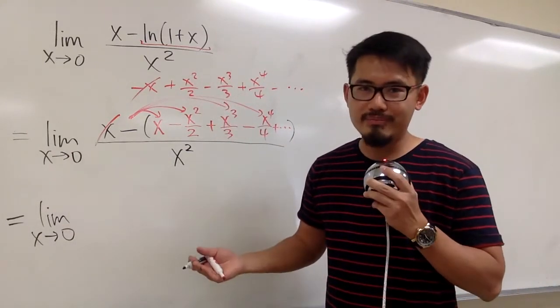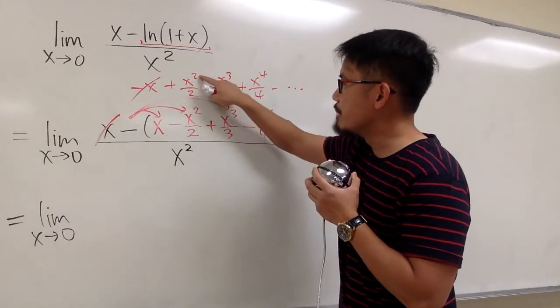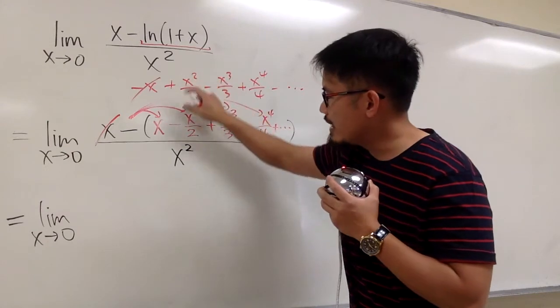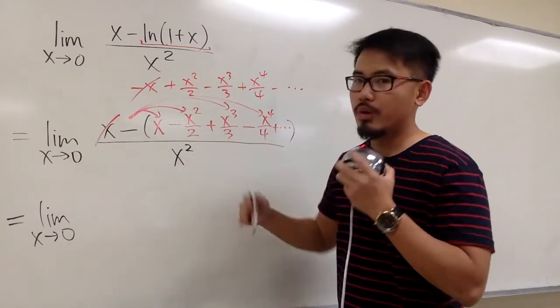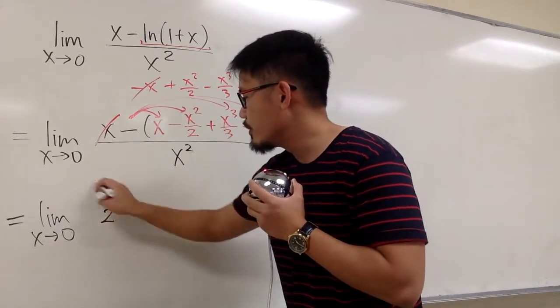Can we do anything more? Yes, we sure can. Because right here we have x²/2, and this is divided by x². So this x² and that x² will cancel each other out. We will have positive 1/2 to begin with.